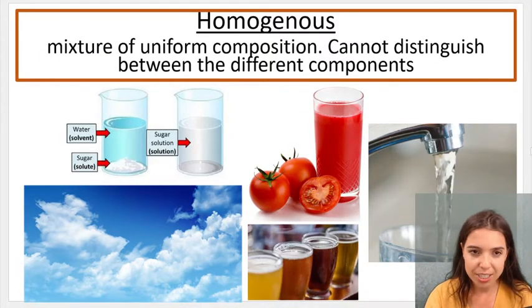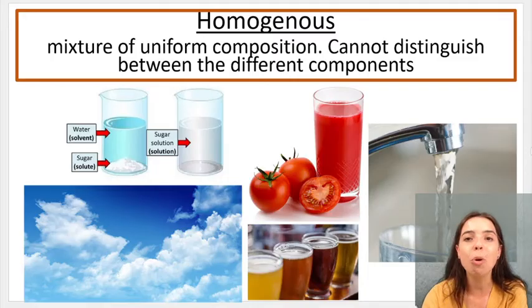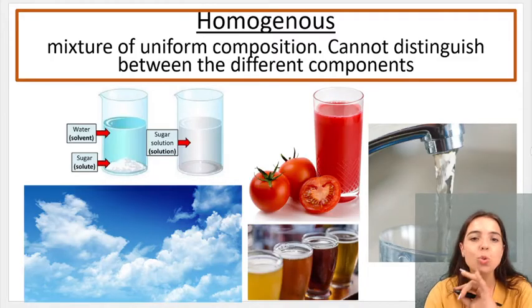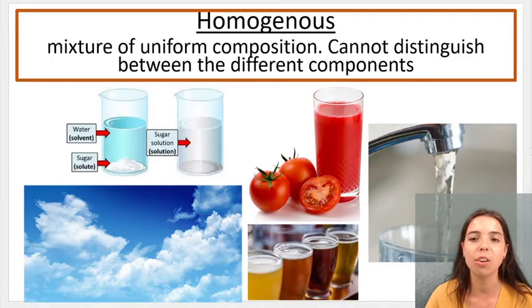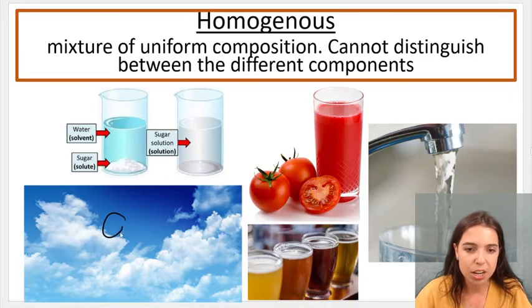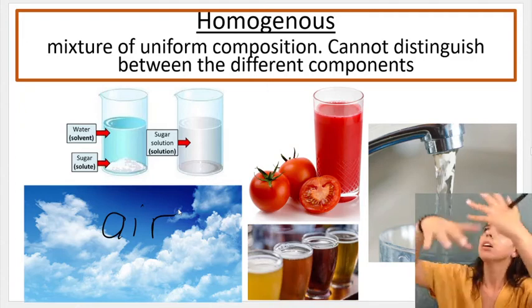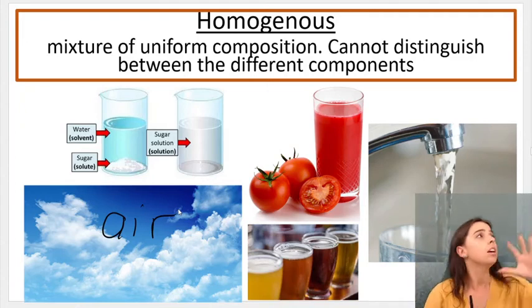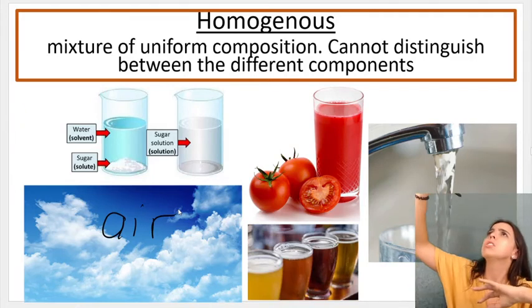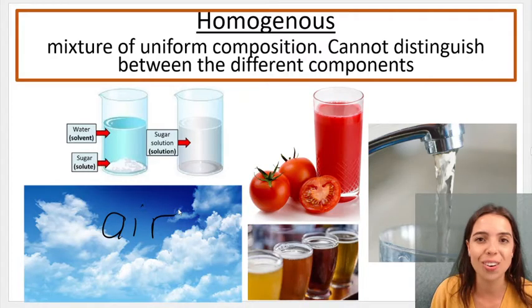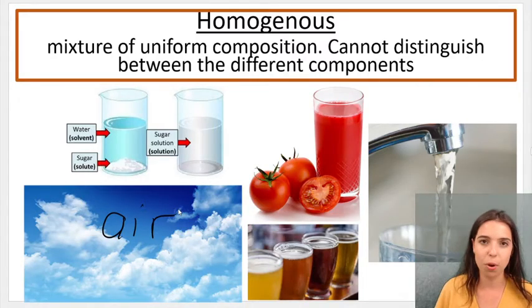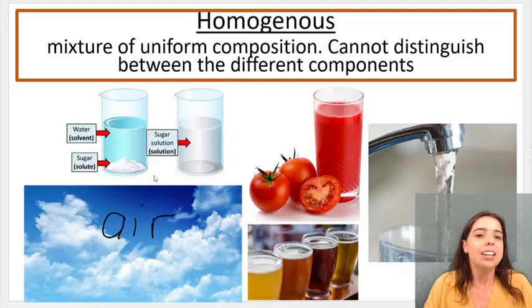Homogenous or homogenous is a mixture of uniform composition. You can't tell the difference between the components. Here's air. So I put this picture here because this is air. If you look at the air around you, you can't see it, but air around you, can you see the nitrogen gas and the oxygen gas? No, you cannot. It's uniform composition.